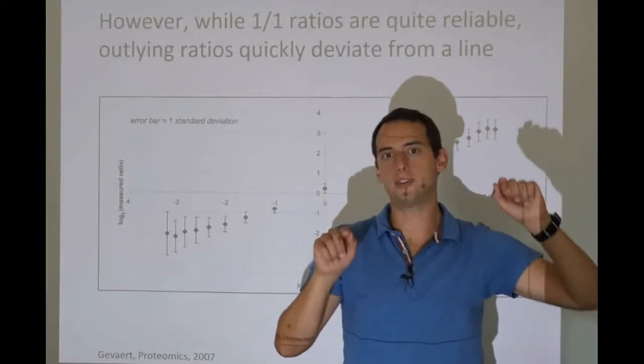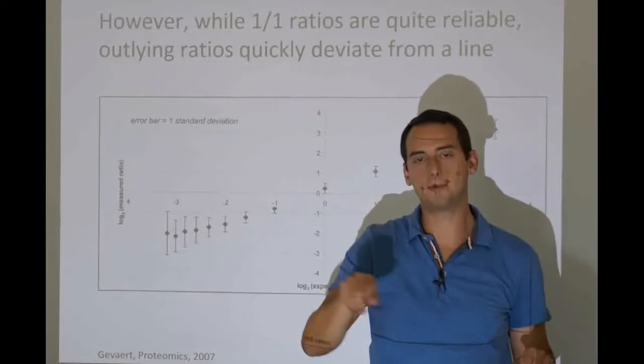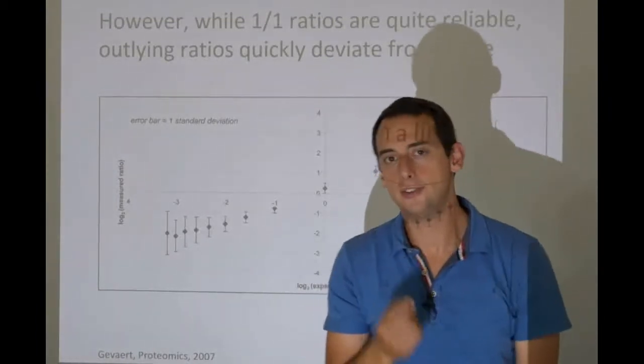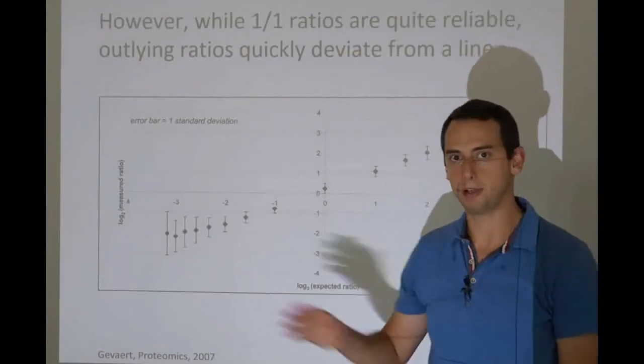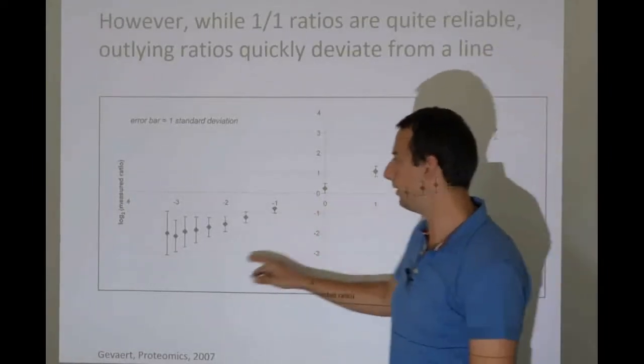So again, we have a detection curve that follows this S-shaped curve. And that is what we call a sigmoid curve, because it looks like an S, like a sigma in Greek. And this is very typical of any detector. It is therefore also typical of a mass spectrometer detector.